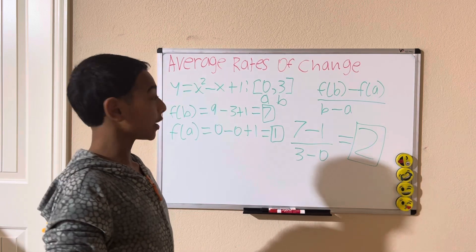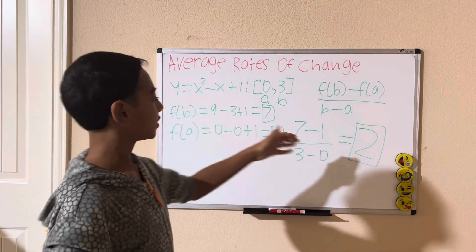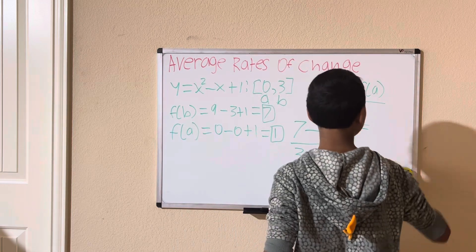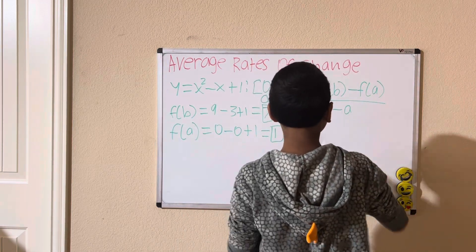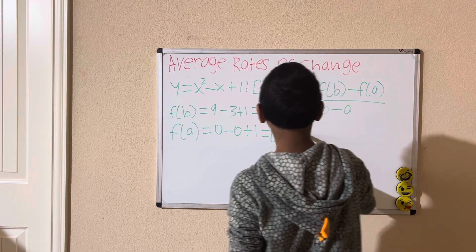So, the average rate of change for this function is 2, over these intervals. Let me give you guys another example for you to try out.